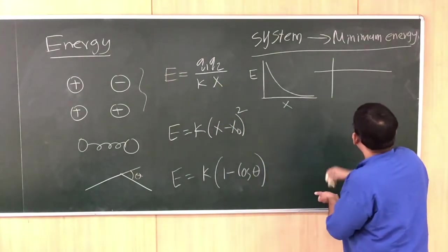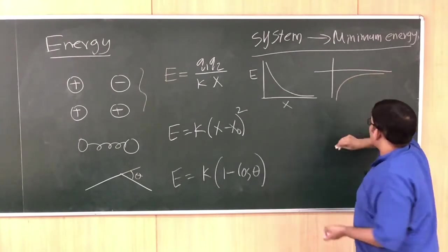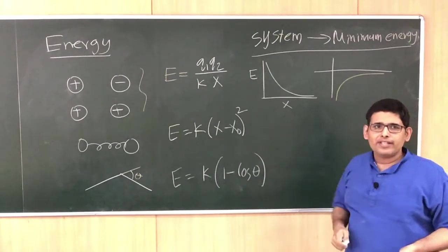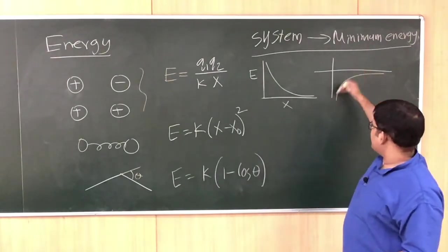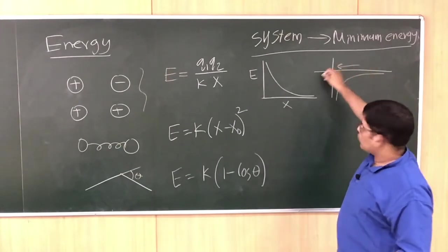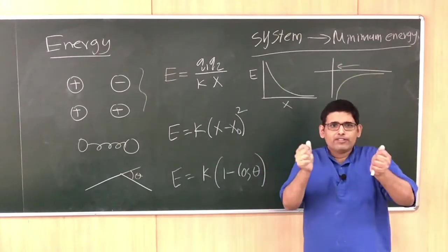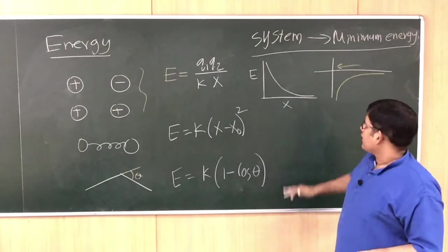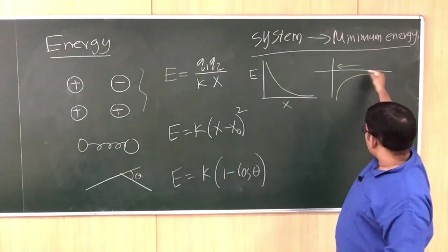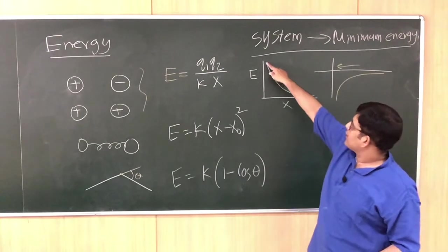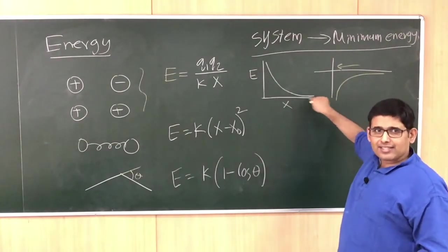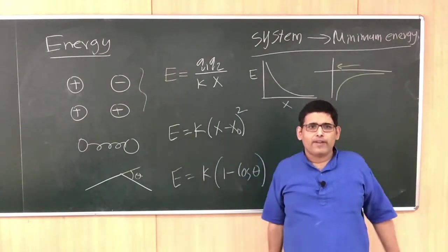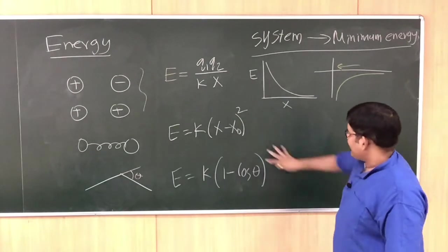When the charges are close to each other, the energy will be minimum — it will be minus infinity, the least energy. So here is higher energy and lower energy. The system would tend to come to a state which has lower energy, which means they should want to come closer and closer. For two plus charges, the energy decreases as r goes to larger and larger values, so the two plus charges would want to go as far as possible.